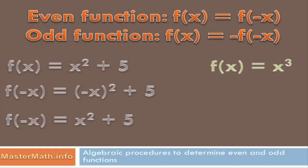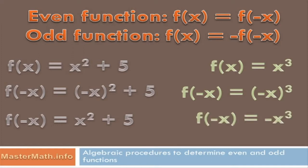How about this one? The function of x equals x cubed. Well, if I substitute minus x for x, then I'm going to get minus x cubed. Minus x cubed will be a negative number, so the function of minus x equals minus x cubed.